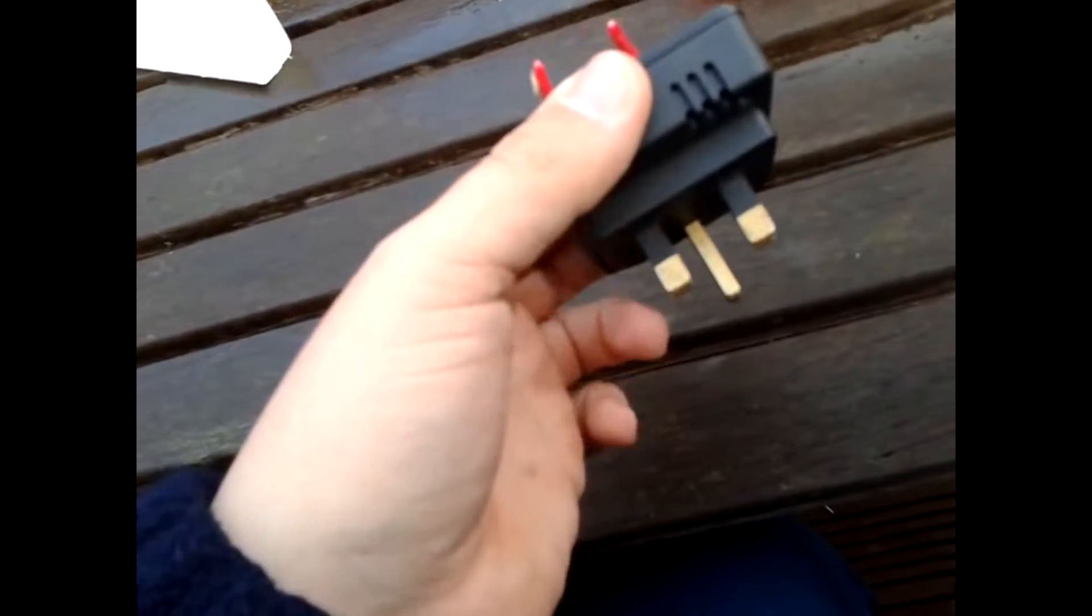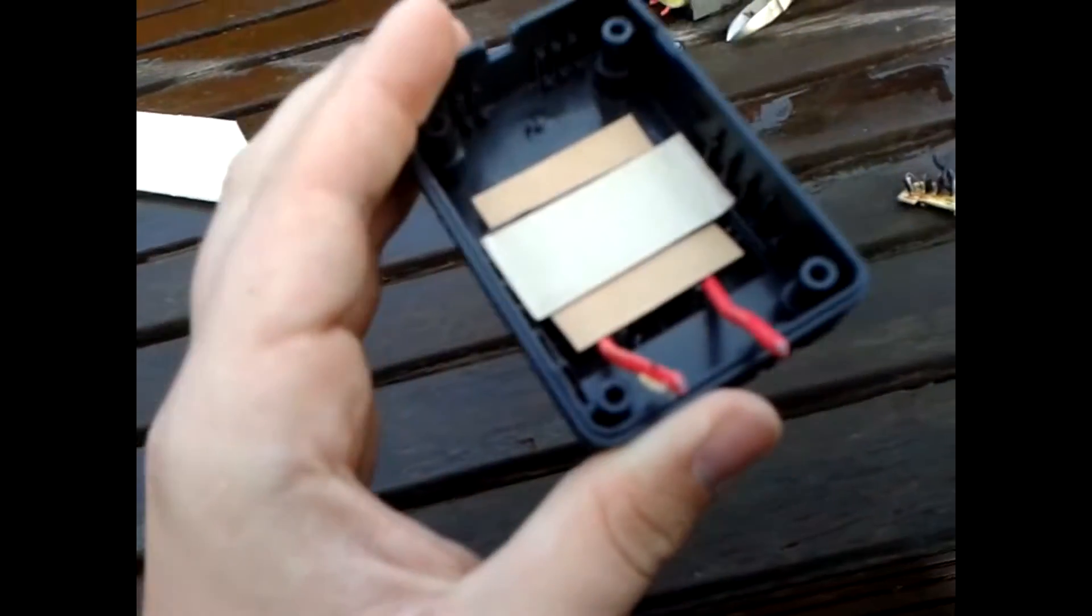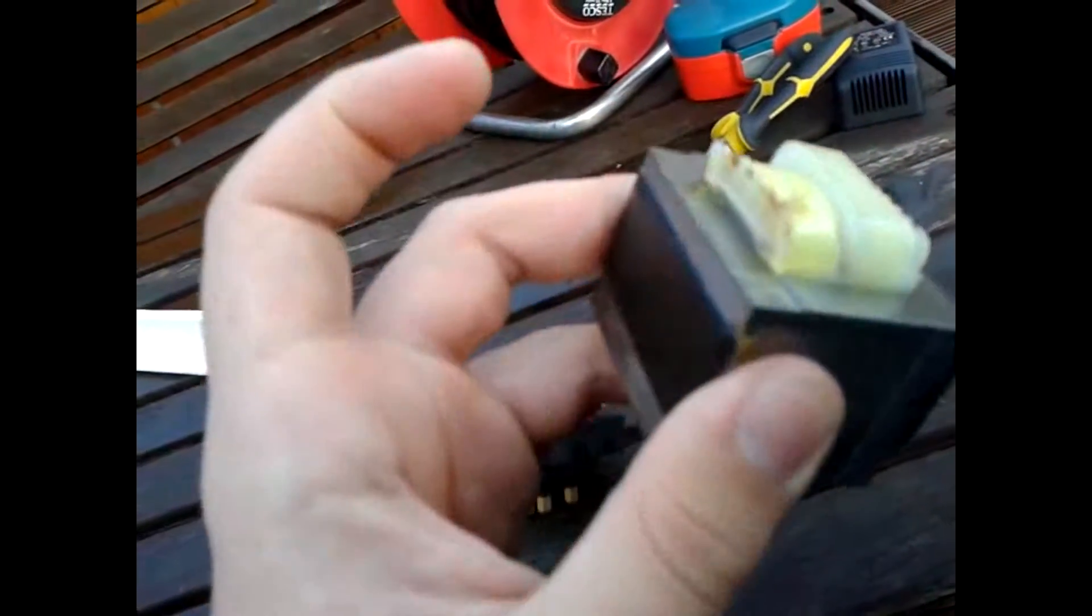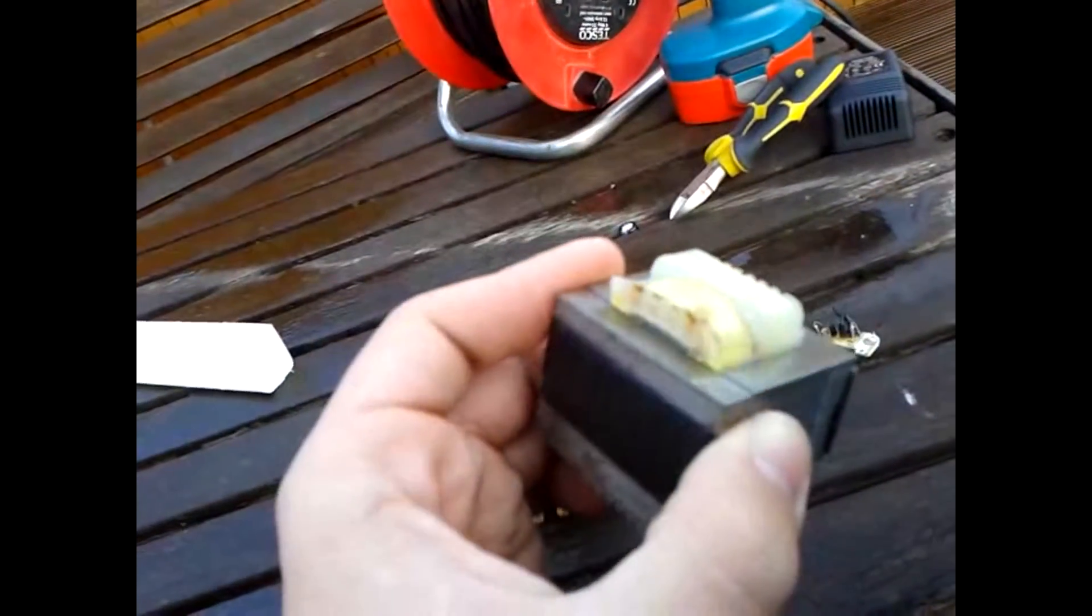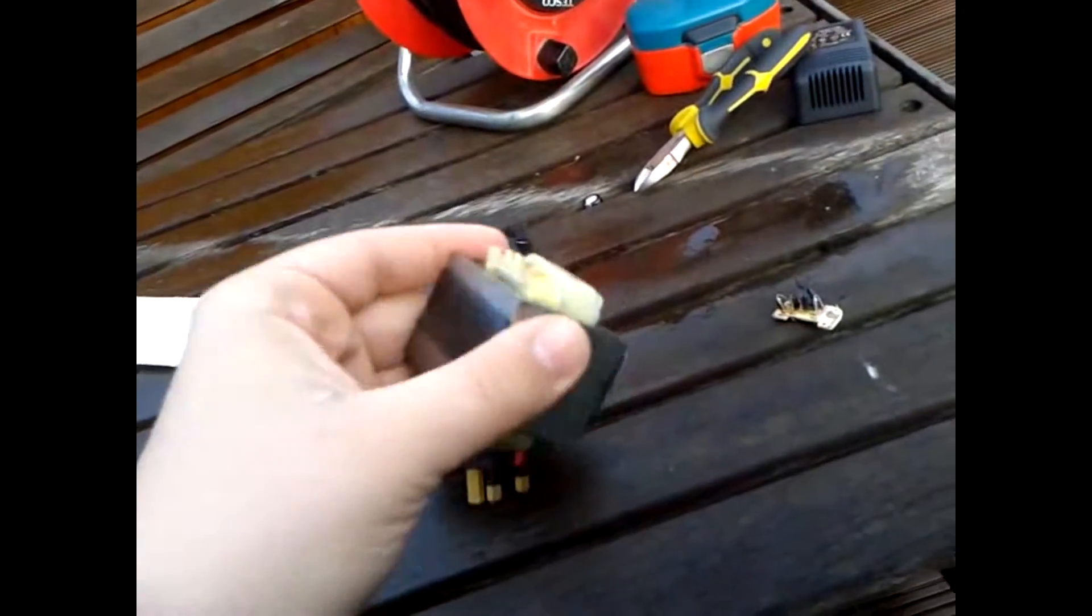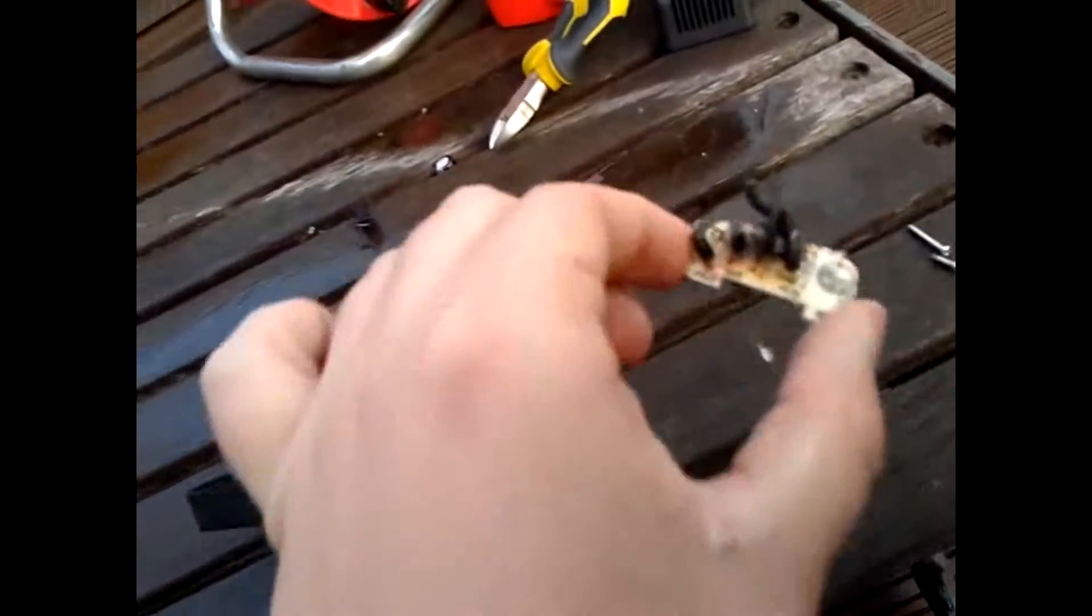You had two wires going in, your live and your neutral, going to the transformer. So 240 volts in, about 120 odd volts or even 50 or 25, if that, coming out into this circuitry.